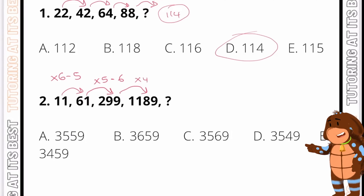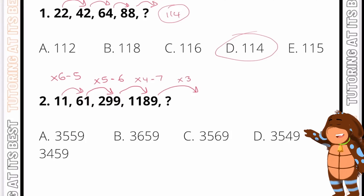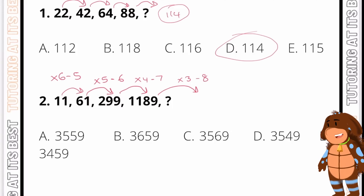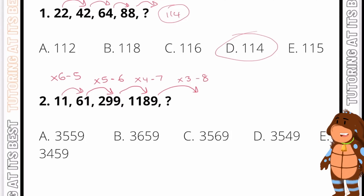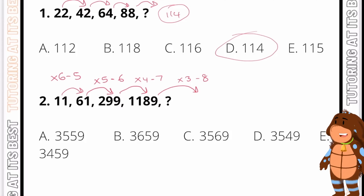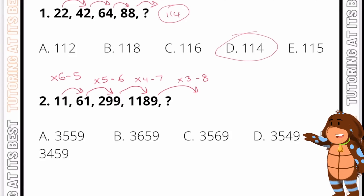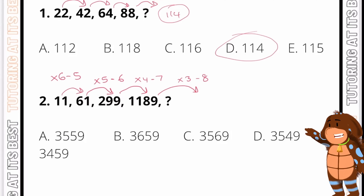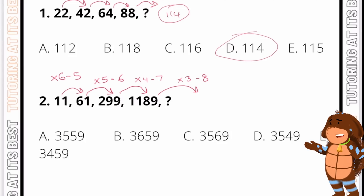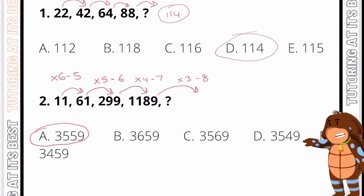What I mean is: for the next step it might be times four minus seven, and then times three minus eight. So if we have 299 multiplied by four we get 1196, and then subtracting seven leaves us with 1189 — so that pattern works. And then for the final stage, 1189 multiplied by three minus eight gives us 3559. And that is how we answer this question.